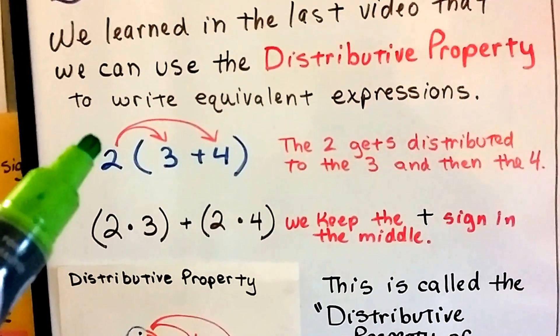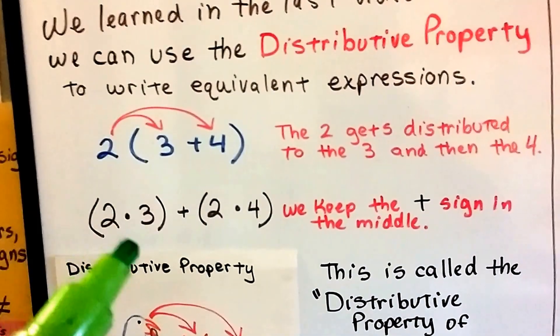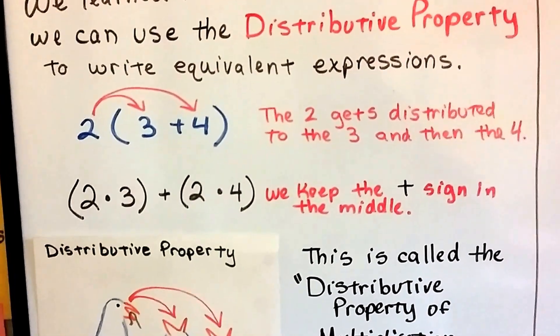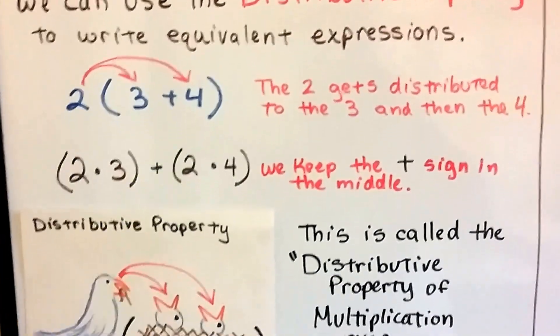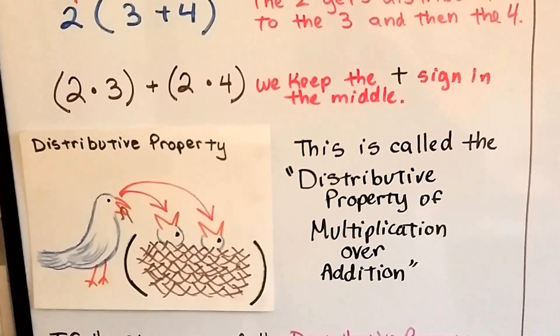3 plus 4 is 7 times 2 is 14. And if we do it this way, we get 2 times 3, which is 6, plus 2 times 4, which is 8, and 6 plus 8 is 14. Same number. Just remember to keep that plus sign in the middle. This is called the distributive property of multiplication over addition.